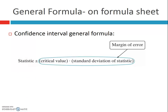The general formula is the same regardless of whether it's for means or proportions. You start with your point estimate — your statistic — and then add and subtract your margin of error. The margin of error is made up of two parts: the critical value, which is like a z-score, and the standard deviation of your statistic. There will be specific formulas later, but this is the general idea.